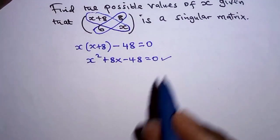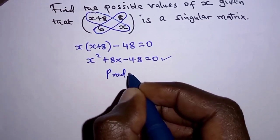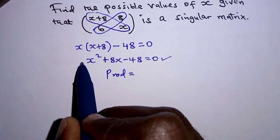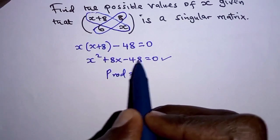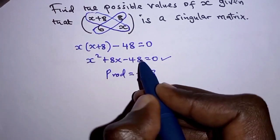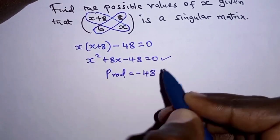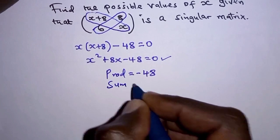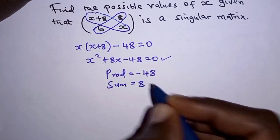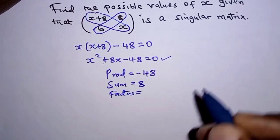To solve this, I'm going to use the factor method. We look for the product of two numbers that equals the coefficient of X² multiplied by -48, which is 1 × -48. The sum of the two numbers should equal the coefficient of X, which is 8.